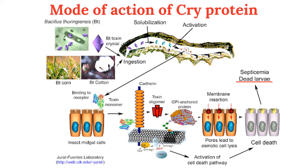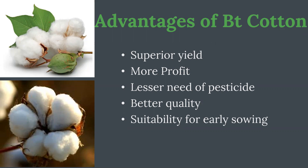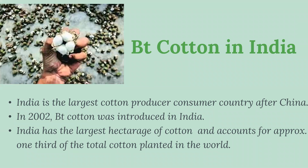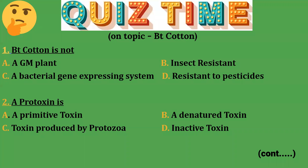The advantages of Bt cotton include superior yield — meaning very high production — more profit, less need for pesticide, better quality of cotton, and suitability to grow early. In India, Bt cotton was introduced in 2002. India has the largest hectare of cotton and accounts for approximately one-third of the total cotton planted in the world.